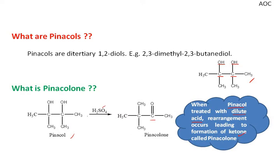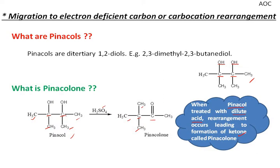When a pinacol is treated with a dilute acid, rearrangement occurs leading to formation of a ketone. What kind of rearrangement can you see? Here this carbon has two methyl groups, this carbon also has two methyl groups — but here this carbon now has three methyl groups. So some kind of migration must have occurred. Remember, pinacol rearrangement comes under the category where the migration is occurring to the electron-deficient carbon, or we can say carbocation rearrangement is occurring.